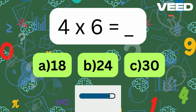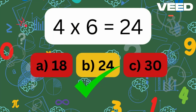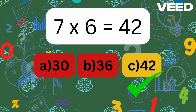4 times 6 is? 4 times 6 is 24. 7 times 6 is? 7 times 6 is 42.